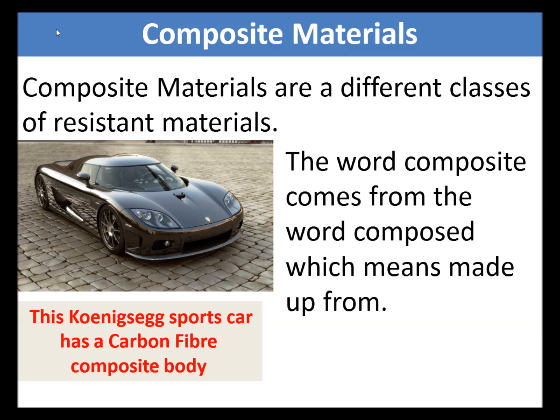Composite materials are a different class of resistant materials. The word composite comes from the word 'composed', which means made up from — so generally made up from two or more different types of materials. An example of a composite material is the Kona Seg, which is made from a carbon fiber composite body.